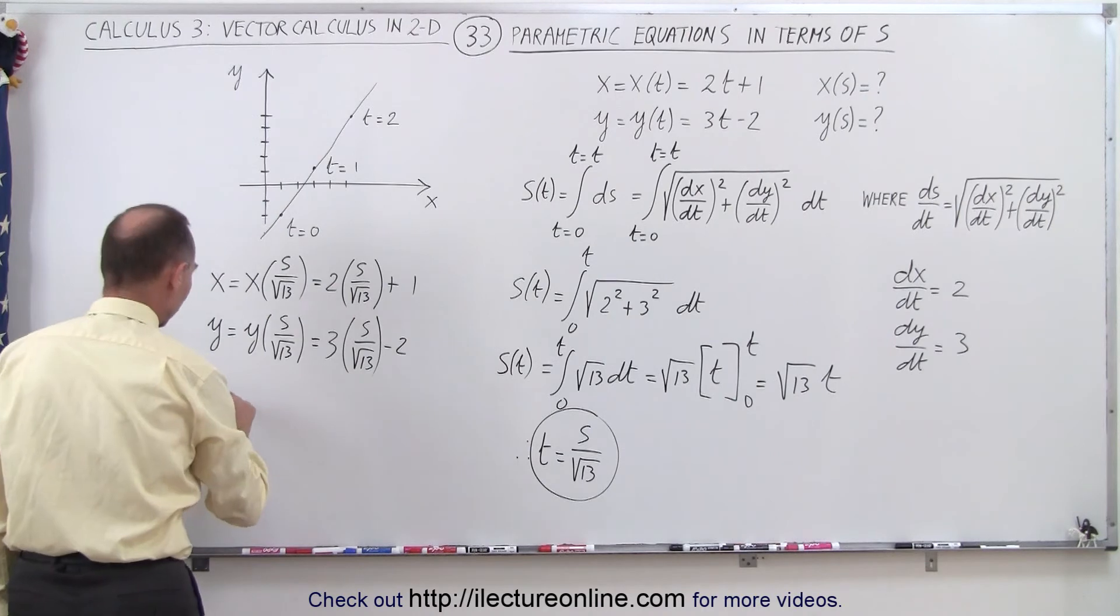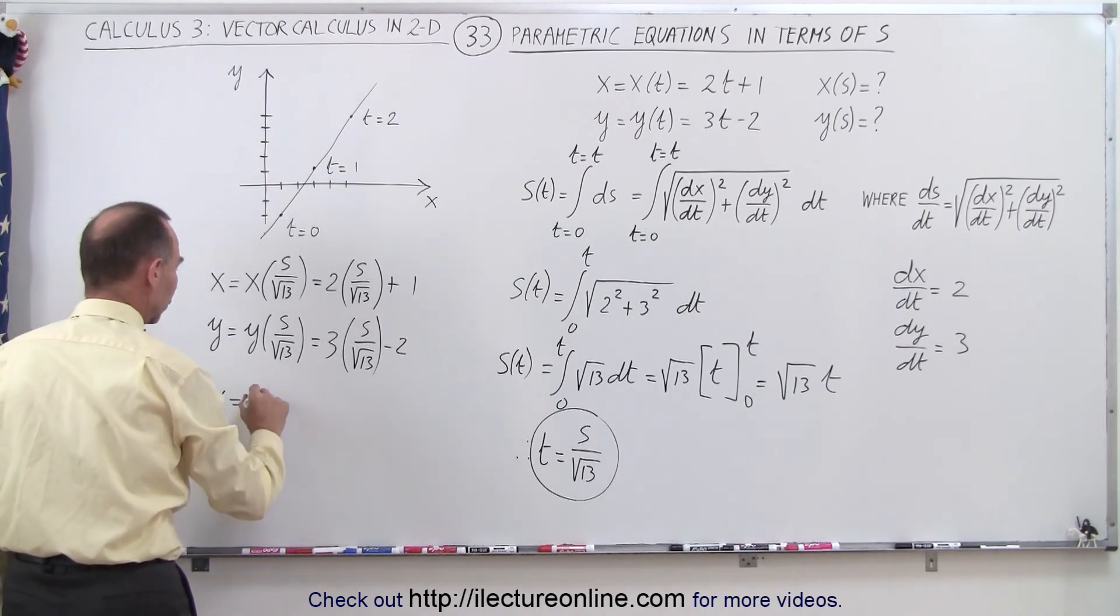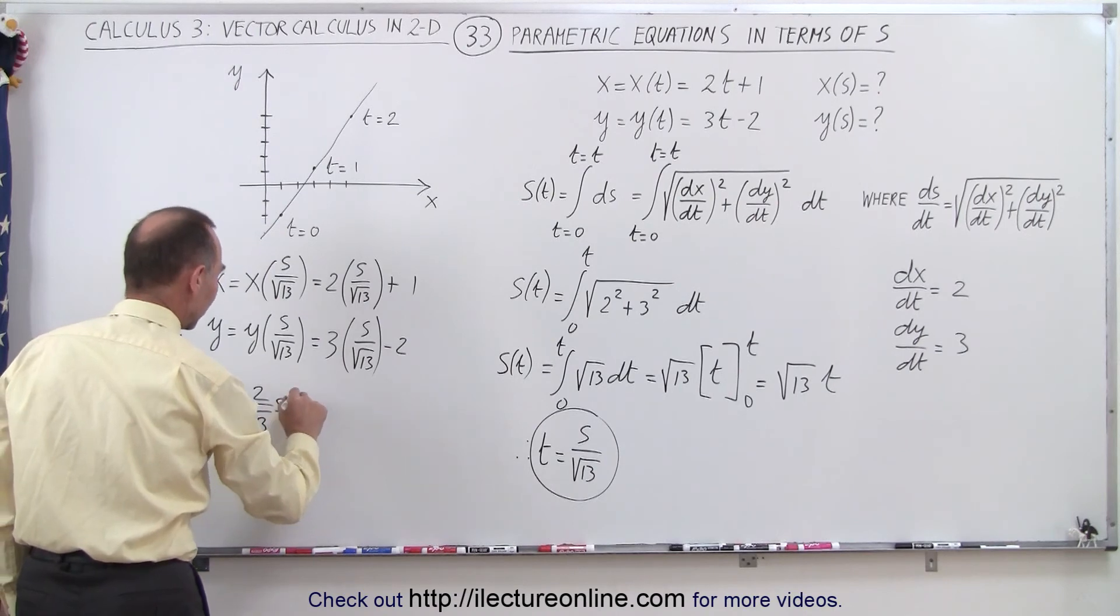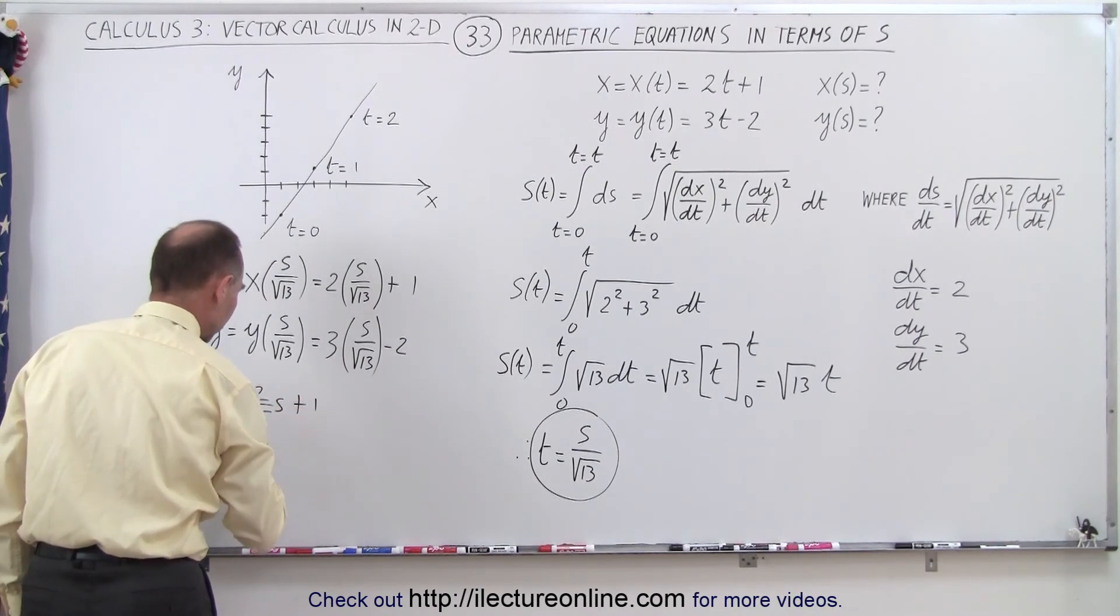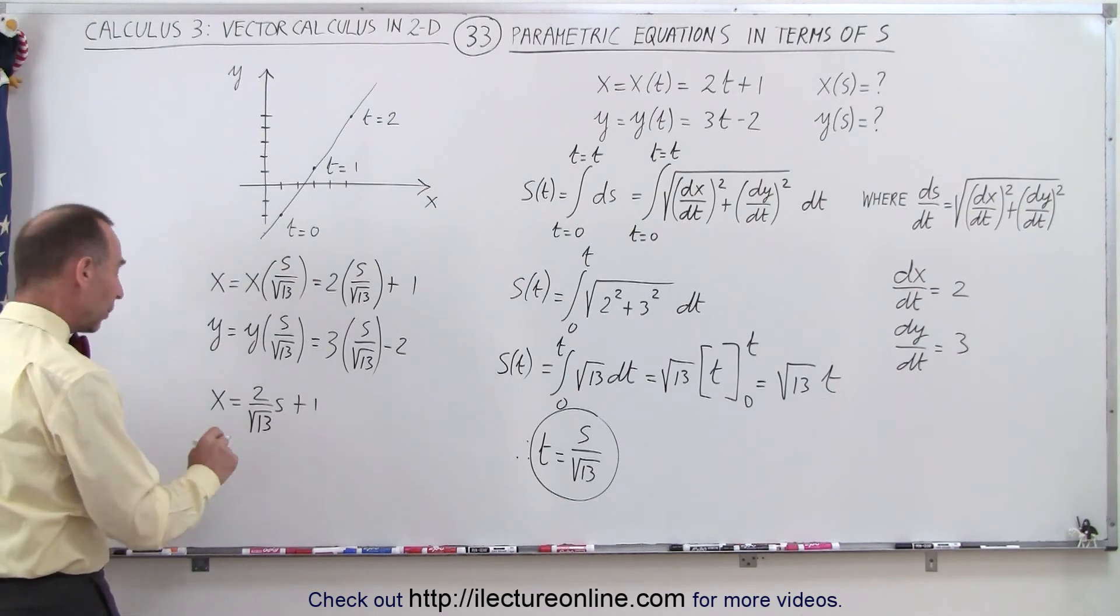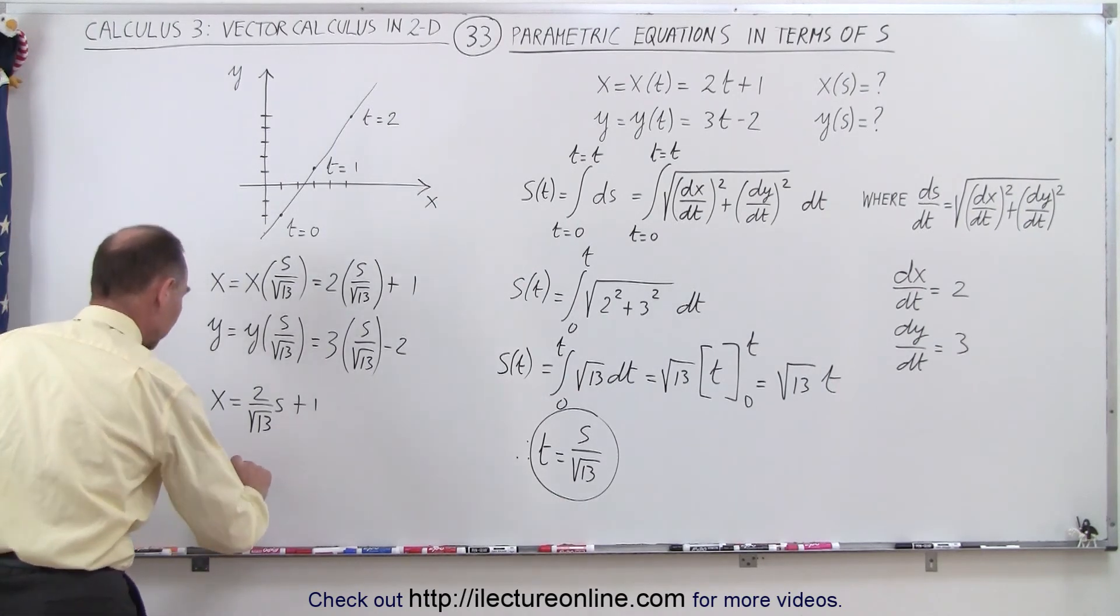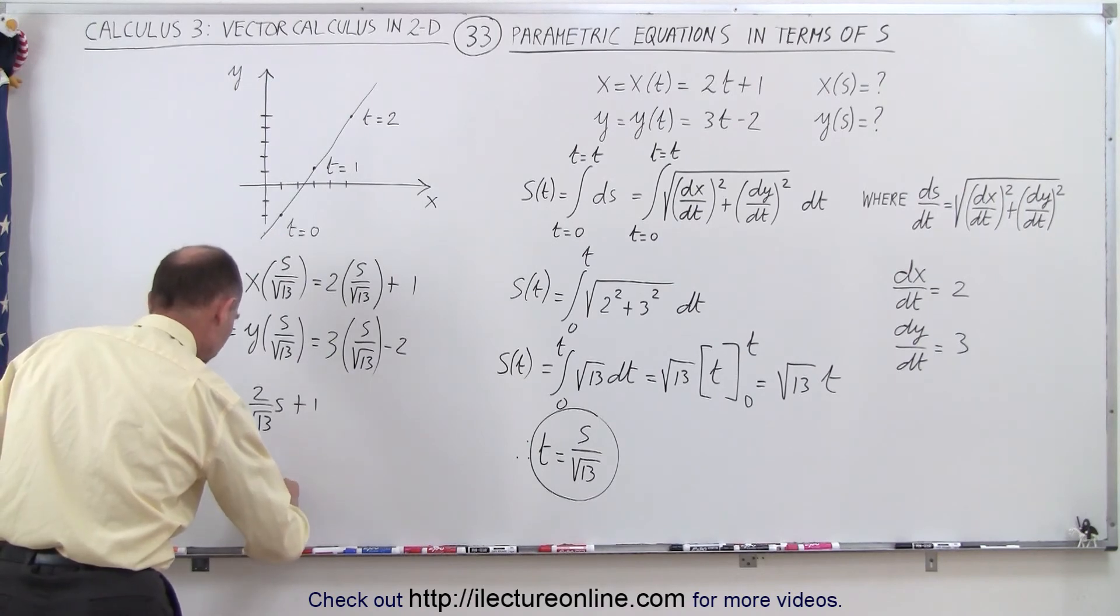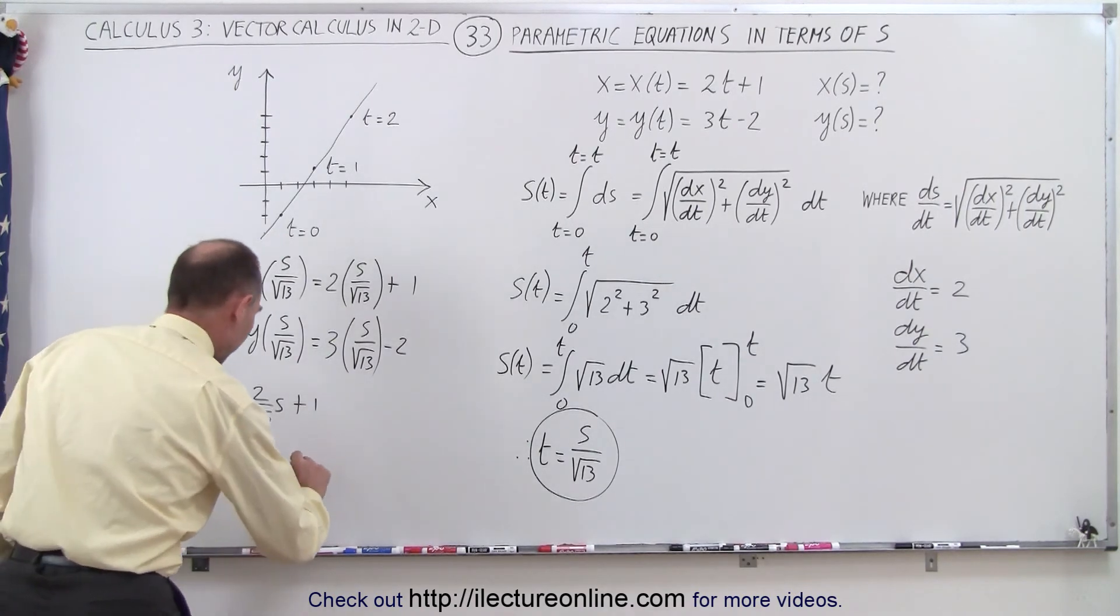And so we can simplify it a little bit. We could say, therefore, that x is equal to 2 divided by the square root of 13 times s plus 1. And let's separate those two right here. And so now we can write that y is equal to 3 over the square root of 13 times s minus 2.